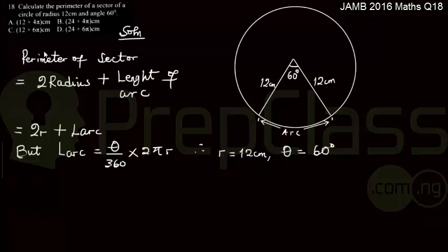In order to calculate the perimeter of a sector, you need to calculate the value of the two radii, which serve as the legs, then the length of the arc as the distance between the radii. So basically, that is given as 2r plus length of arc.